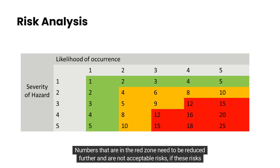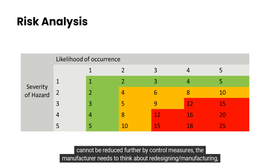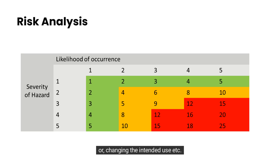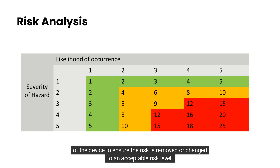Numbers in the red zone need to be reduced further and are not acceptable risks. If these risks cannot be reduced further by control measures, the manufacturer needs to think about redesigning manufacturing or changing the intended use of the device to ensure the risk is removed or changed to an acceptable risk level.